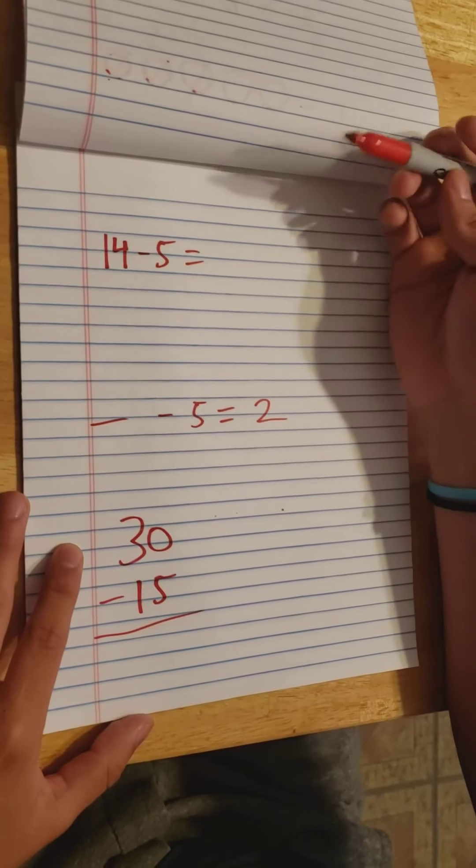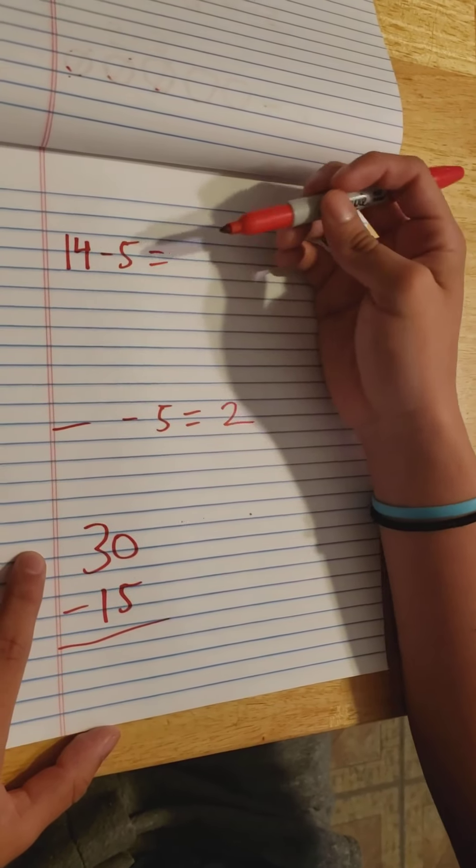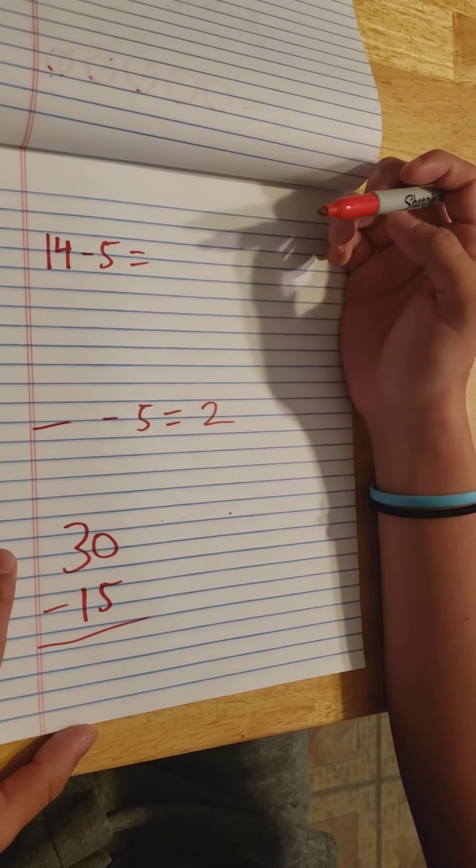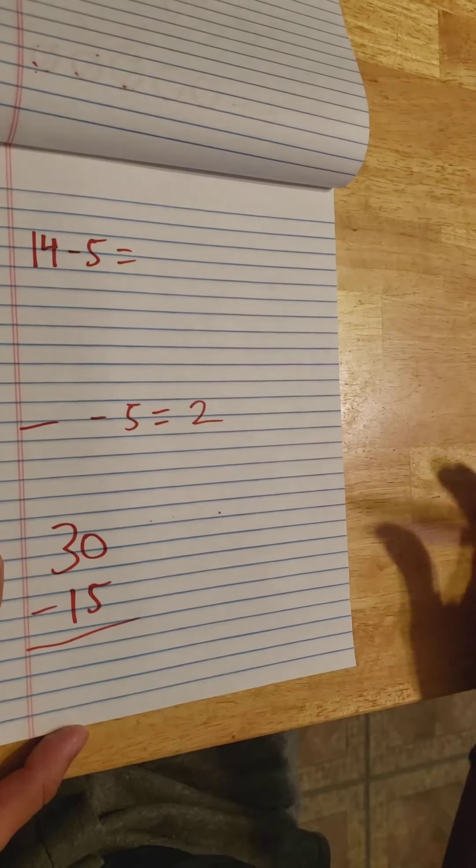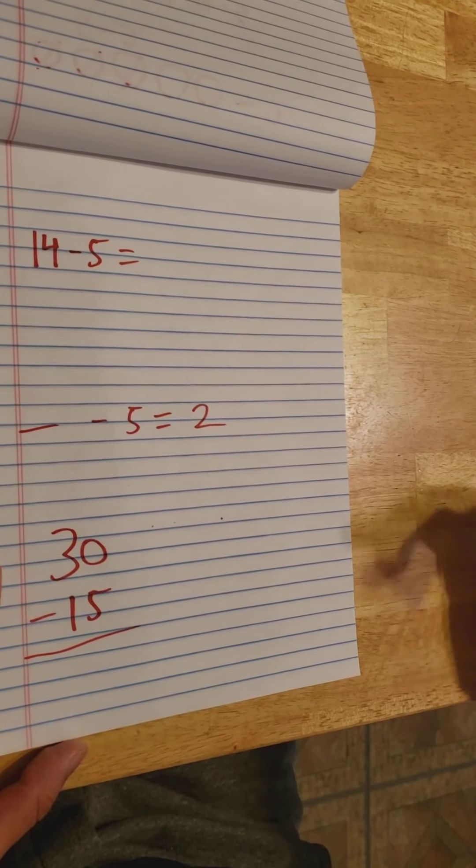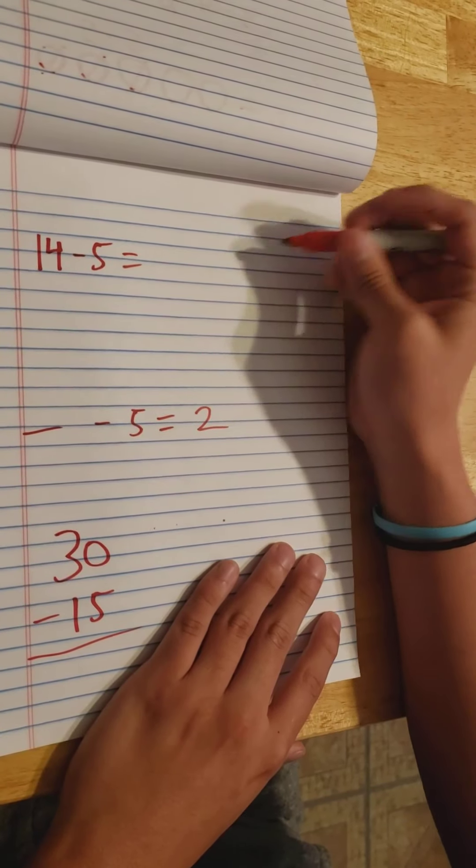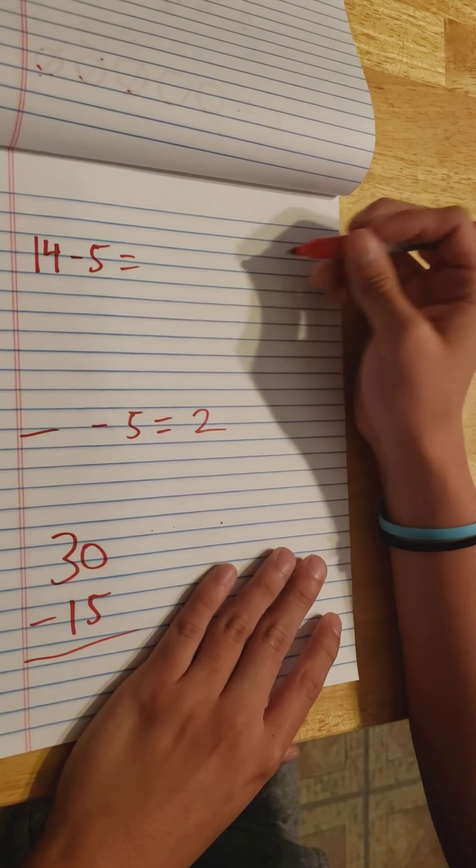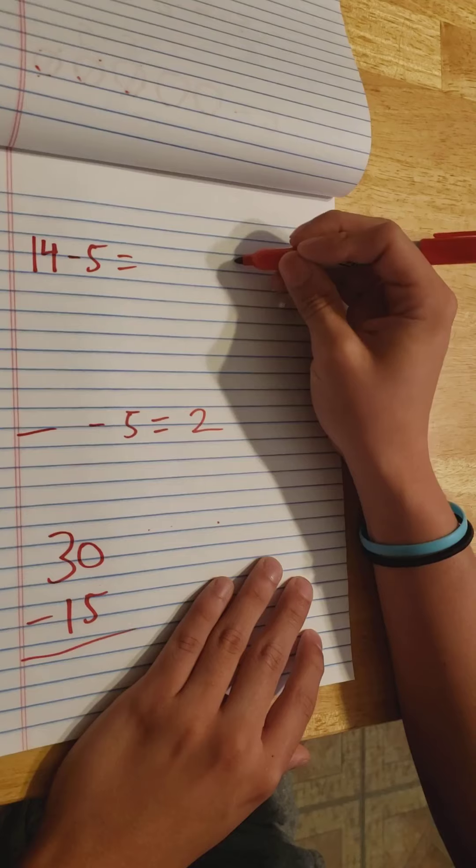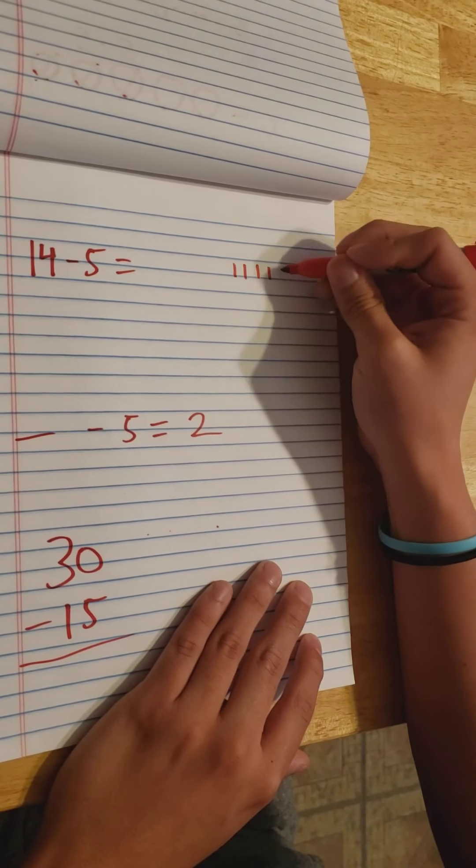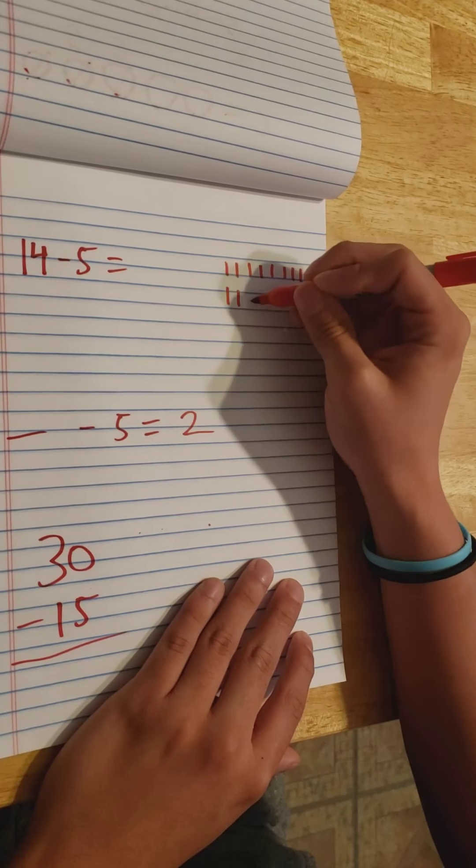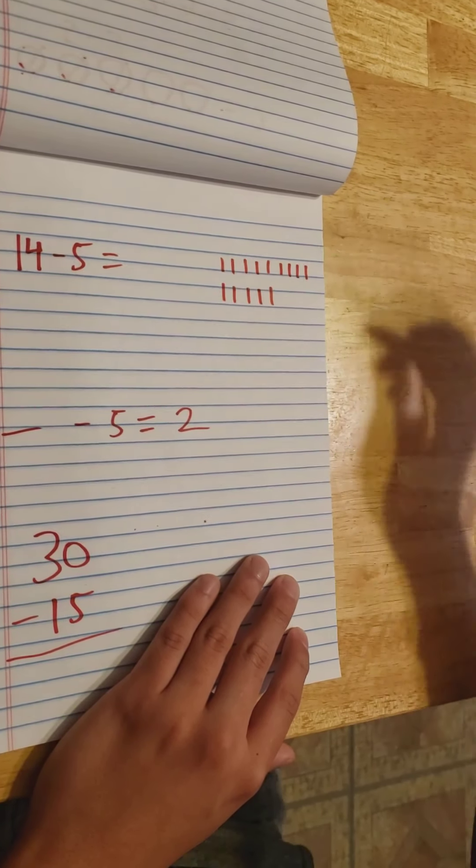We see that we have a problem 14 minus 5. Now if you don't know what 14 minus 5 is off the bat, what you can do is use objects to help you out if you need the help. So let's draw 14 objects. I like to use tally marks, but you can use boxes, circles, triangles, whatever. So we'll go 1, 2, 3, 4, 5, 6, 7, 8, 9, 10, 11, 12, 13, 14 lines.